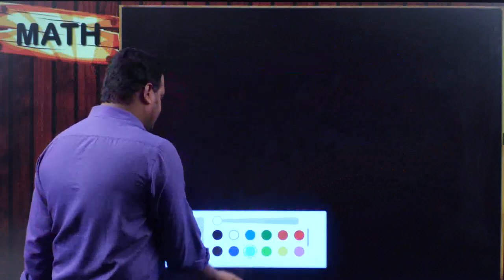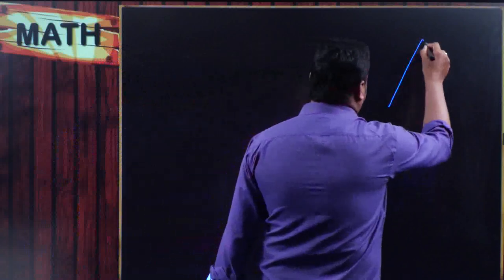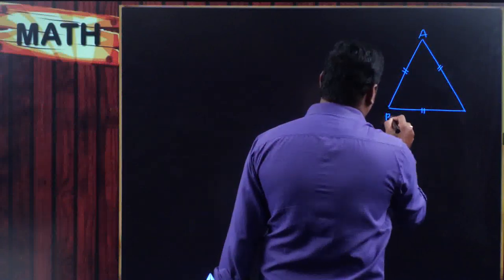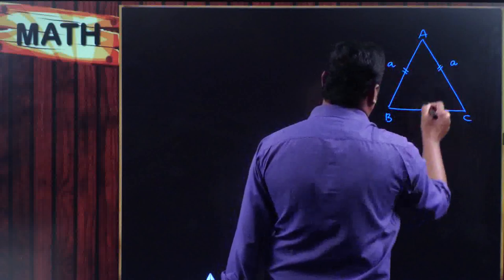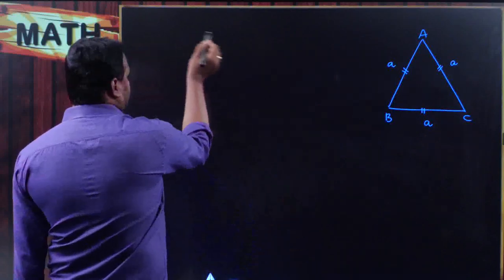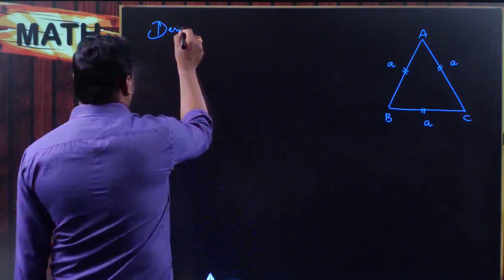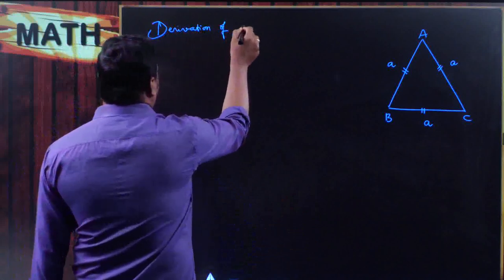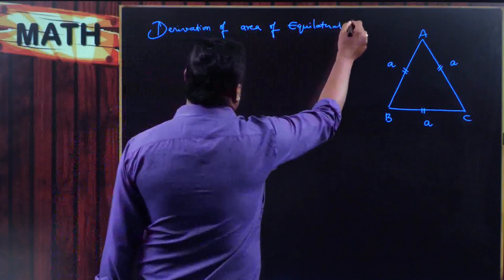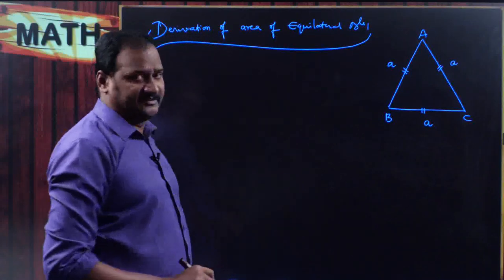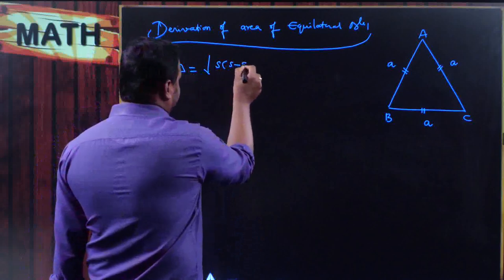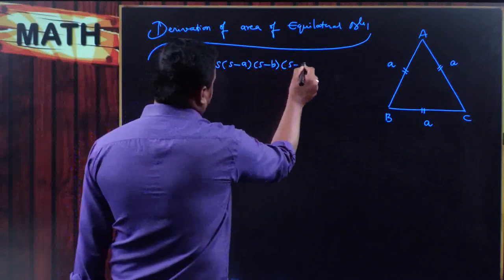First of all, how to find area of equilateral triangle. Let us have an equilateral triangle ABC in which all the three sides are equal. Let each side be equal to small a. To find the area of this triangle, I am using Heron's formula — derivation of area of equilateral triangle. The formula for area of a triangle by Heron's formula is: delta equals root over s into s minus a into s minus b into s minus c.